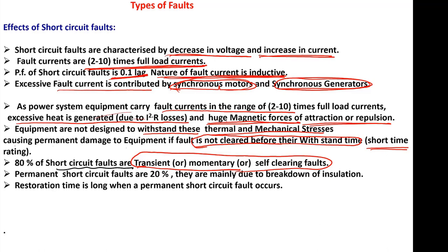Permanent short circuit faults are only 20% and are mainly due to insulation breakdown. When a permanent short circuit fault occurs, the breaker will clear the fault, but making the system healthy again may take some days or even months to rectify the issue.